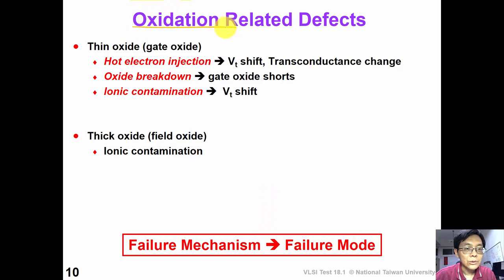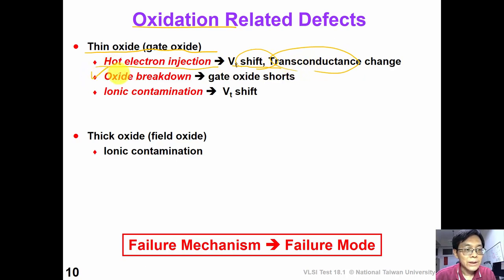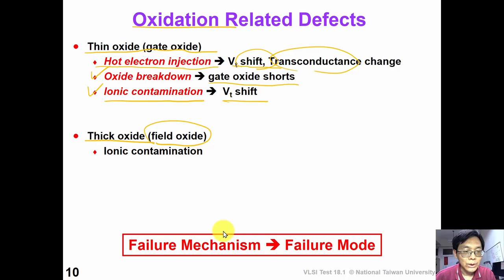First, oxidation-related defects. In the thin oxide process, we can have hot-electron injection, which is a failure mechanism. The related failure mode can be VT shift or transconductance change. We can also have oxide breakdown as a failure mechanism, which can be modeled by gate-oxide shorts. We can also have ionic contamination, which is modeled by VT shift. We also have thick oxide-related defects — those thick oxides are also called field oxides. In this slide we use a notation where the left-hand side of the arrow is the failure mechanism and the right-hand side is the failure mode.